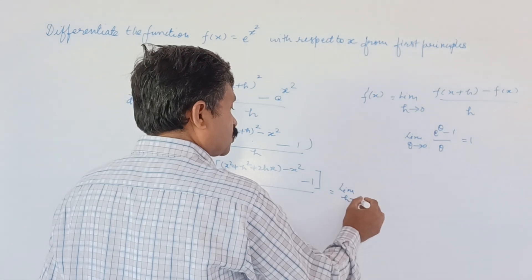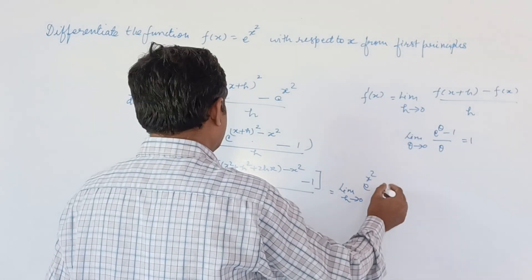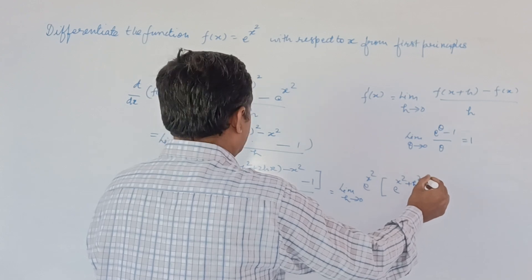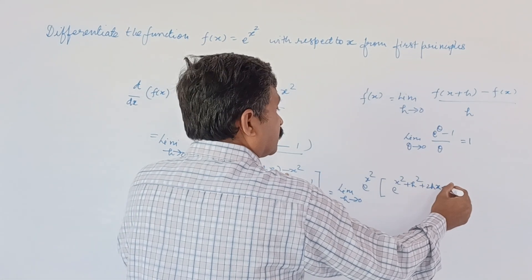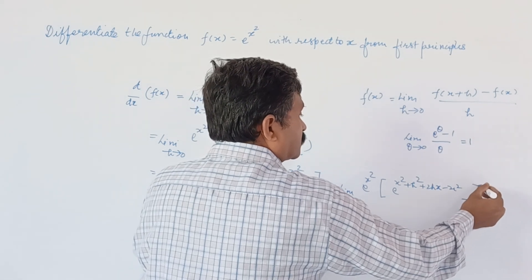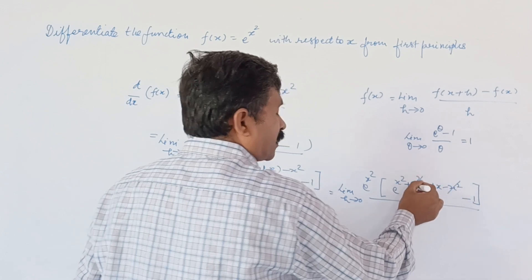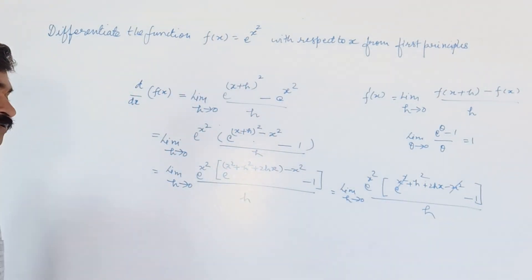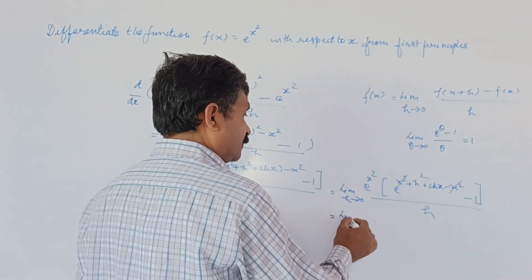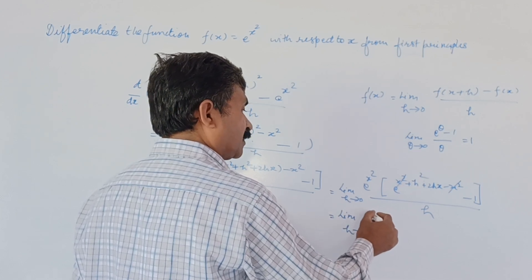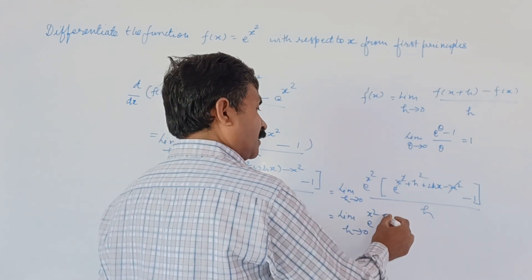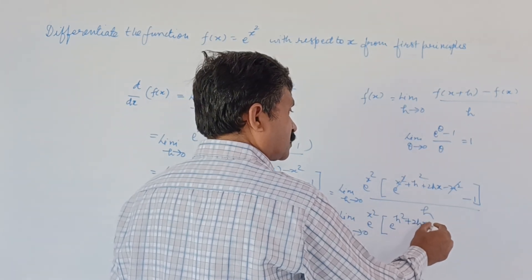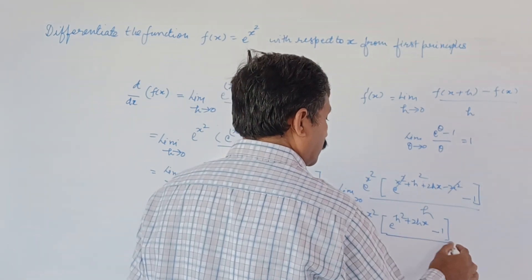Simplifying further: limit h tends to 0, e raised to the power x squared, times e raised to the power (x squared + h squared + 2hx minus x squared) minus 1, all divided by h. The x squared terms cancel, so we are left with limit h tends to 0, e raised to the power x squared, times (e raised to the power (h squared + 2hx) minus 1) upon h.